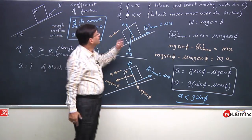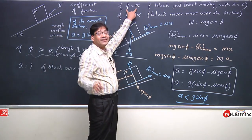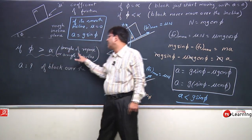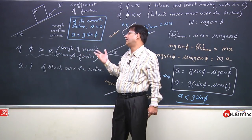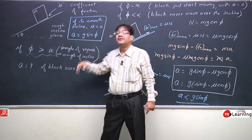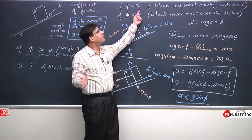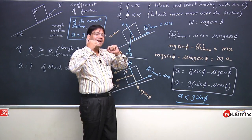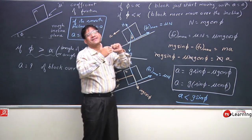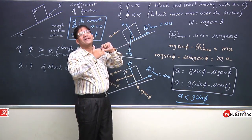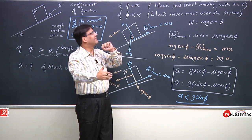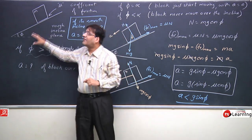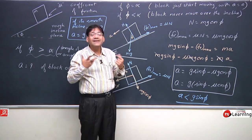The important point is that the block will slide down the incline only when the angle of incline φ is greater than the angle of repose α. If φ equals α, the block just starts sliding and will slide down with zero acceleration — that is, constant velocity. And if the angle of incline is less than α, the block will not slide at all.